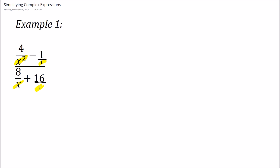Then what we do is multiply the whole top and the whole bottom by x squared, because what I'm doing is multiplying by x squared over x squared, and we know that x squared divided by x squared is just 1. So if I multiply the top and bottom by x squared, I'm really just multiplying by 1. We're going to distribute this through and see what this comes out to be.